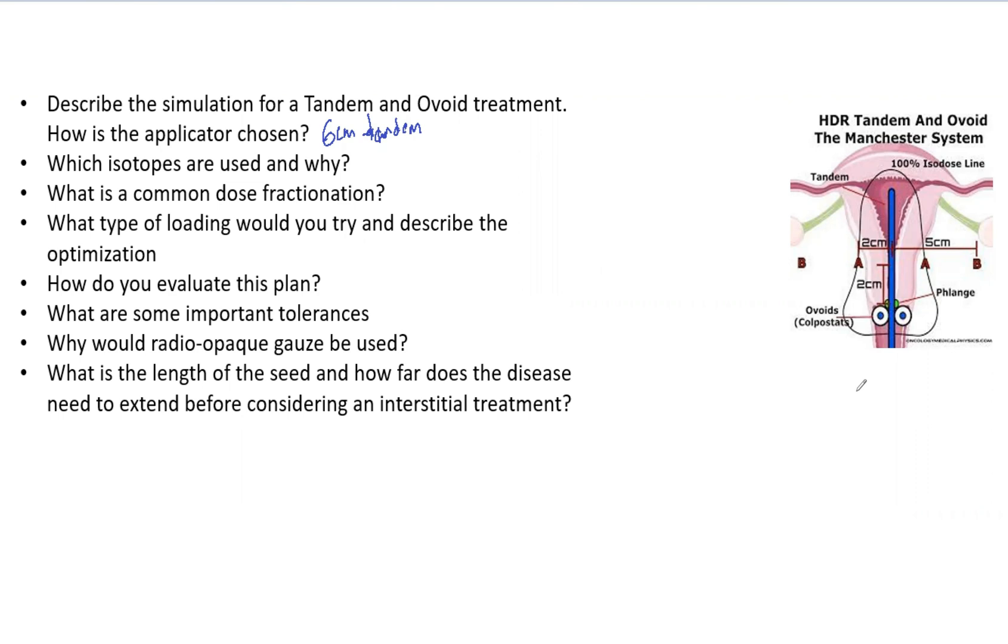It also stretches out the skin folds into the fornices to ensure they get completely treated. During simulation you may want to pack gauze into that space to ensure things don't move. You typically use 2 millimeter slices and a possible colpostat to reduce the dose.